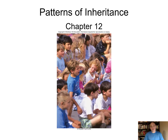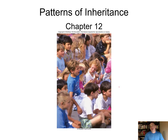We're going to look at patterns of inheritance in this chapter. You can see a picture of children in the title slide. All these children look different, highlighting the genetic variation we see within populations. But if you were to look at any one of these children and then look at their parents, you would see some similarities. They do not look exactly like their parents, but quite similar because they inherited traits from them.